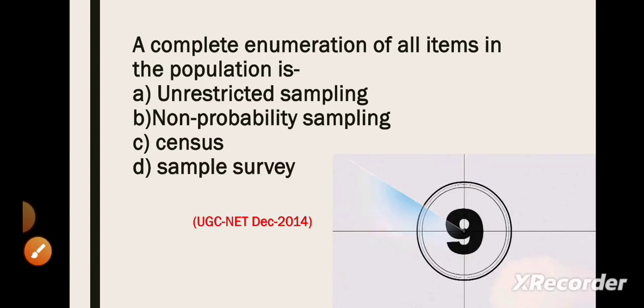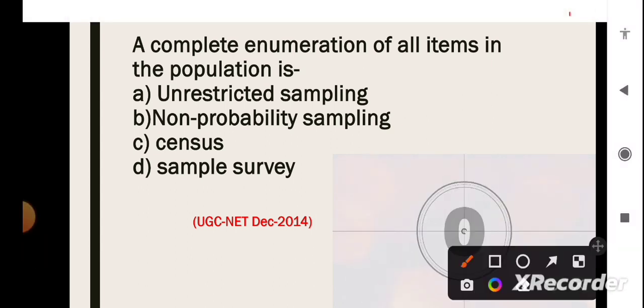Next question is, a complete enumeration of all items in the population is known as? And here, the correct option is option C i.e. census.